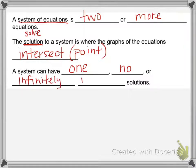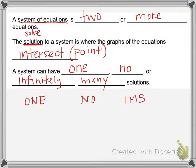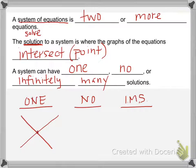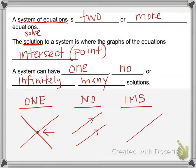So we'll talk about what those scenarios look like. We've got one solution, no solution, or infinitely many solutions — I'm going to abbreviate that IMS. If we had one solution, our two lines are going to intersect at a point. If we have no solution, the two lines are actually going to be parallel and they will never intersect — there's no point that will make both equations true. And infinitely many solutions is when the two lines you graph end up being the exact same line, right on top of each other, so all of their points are in common.